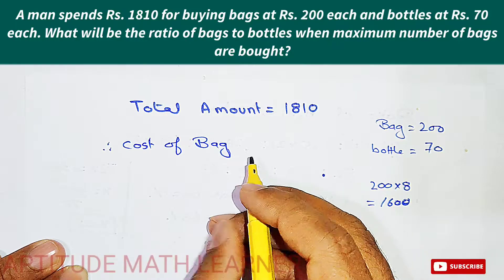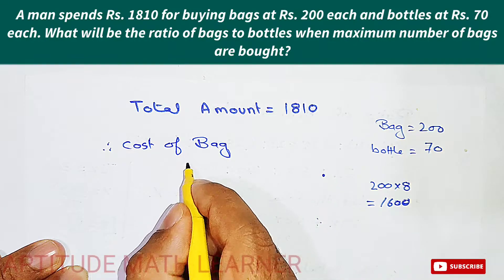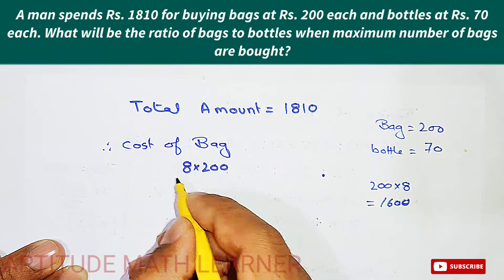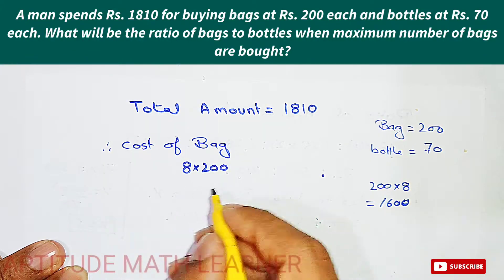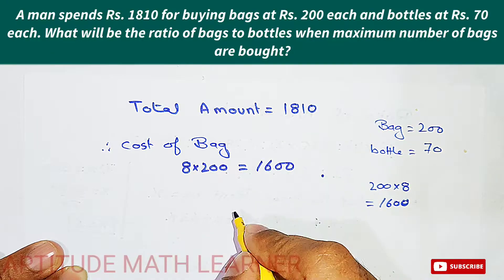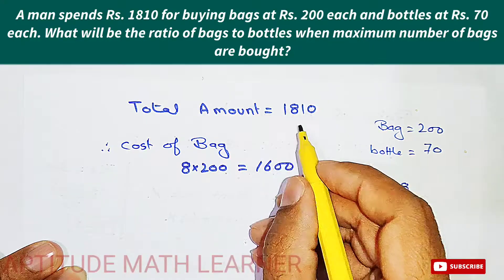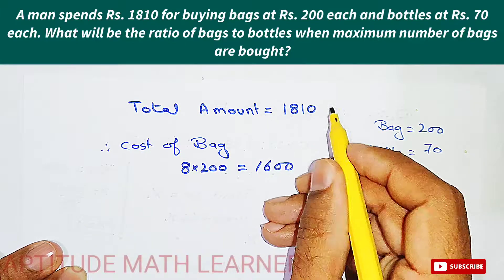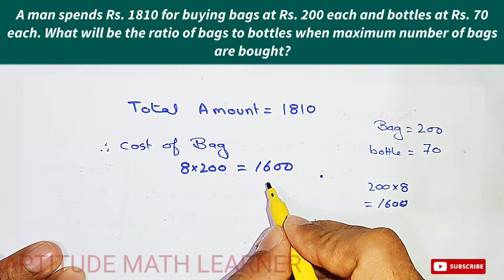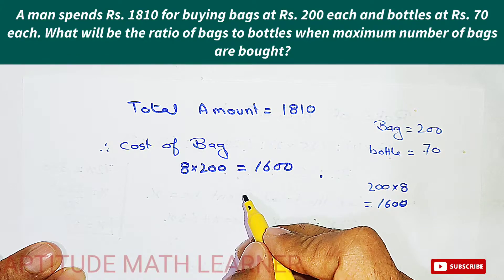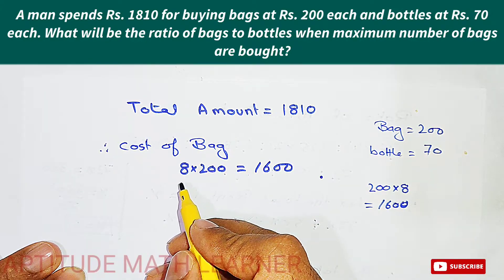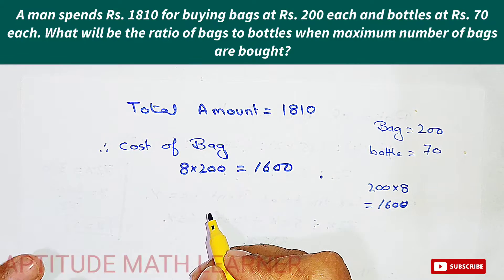Therefore the cost of bags is 8 multiplied by 200, which equals 1600. This is the amount not exceeding what he spent, confirming that 8 is the maximum number of bags.